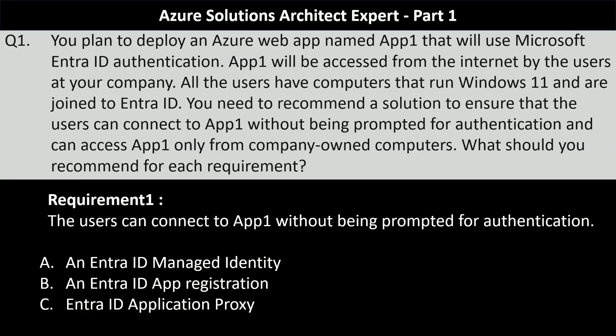This is the first question of our AZ-305 exam practice question series. You plan to deploy an Azure web app named App1 that will use Microsoft Entra ID authentication. App1 will be accessed from the internet by users at your company. All users have computers that run Windows 11 and are joined to Entra ID. You need to recommend a solution to ensure that users can connect to App1 without being prompted for authentication and can access App1 only from company-owned computers.